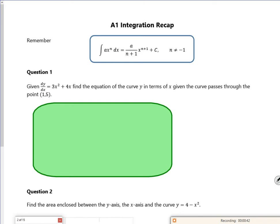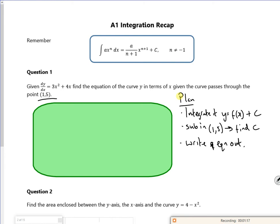So this is a recap. It says given that dy by dx is that final equation of the curve. So in terms of a plan, I want to integrate it. So that'll give me some function of x with a constant on the end. And then I want to sub in the point. And that'll find c. And then just write the equation out. So that's our plan for doing this.